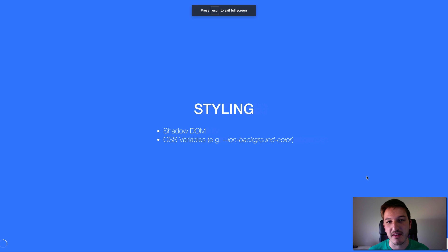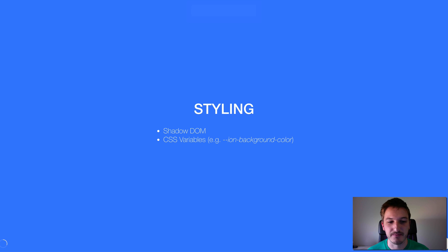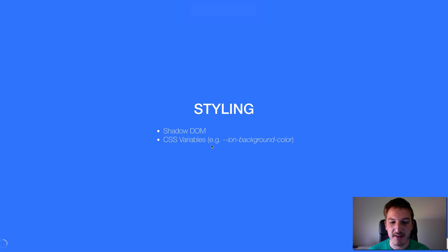As well as those small changes, there are a couple of big things. One of the big things that has changed is how we style applications now. The two big changes here are the use of Shadow DOM and the use of CSS variables. CSS variables basically replace what we were using Sass to do before. In Ionic 3, we'd have Sass variables to change things like the primary or secondary colors.